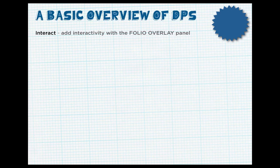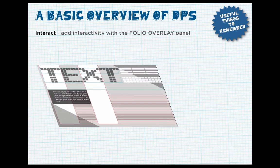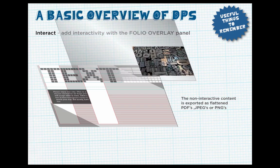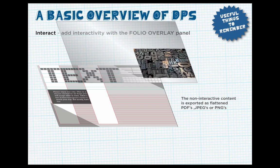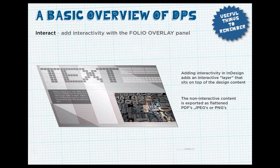When you export your InDesign layout to a Folio, the non-interactive content is exported as a flattened PDF, JPEG, or PNG. And the interactive content overlays as a separate layer on top — and that's why it's called an overlay.